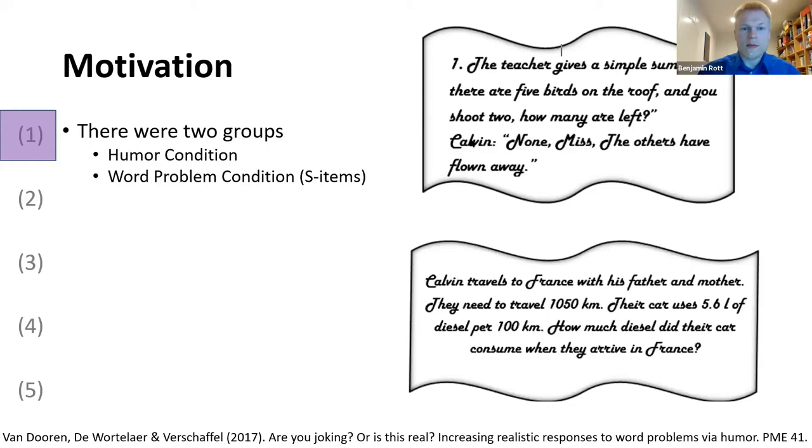And the second group got S-items, normal word problem items, like this one: they travel 1500 kilometers. Their car uses 5.6 liters of diesel per 100 kilometers. How much diesel did their car consume?